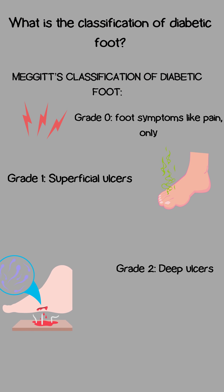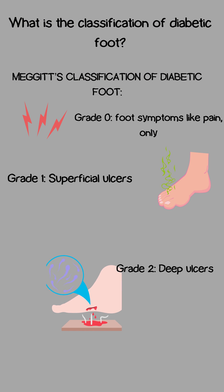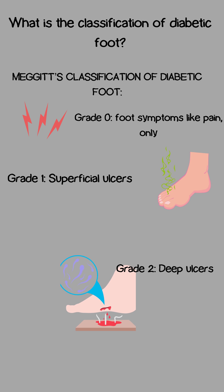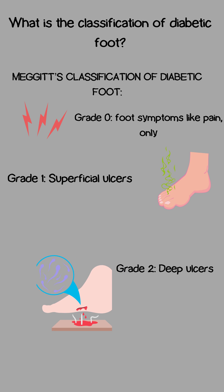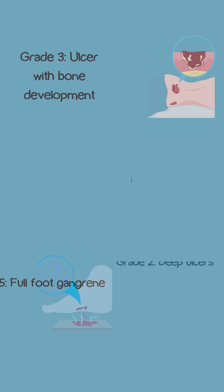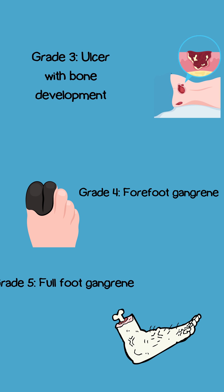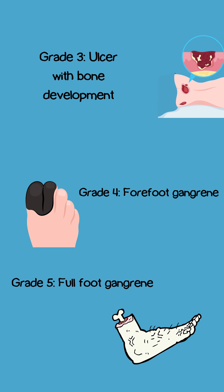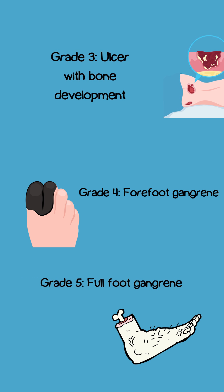Classification of diabetic foot — Medgett's classification: Grade 0, foot symptoms like pain only; Grade 1, superficial ulcers; Grade 2, deep ulcers; Grade 3, ulcer with bone involvement; Grade 4, forefoot gangrene; Grade 5, full foot gangrene.